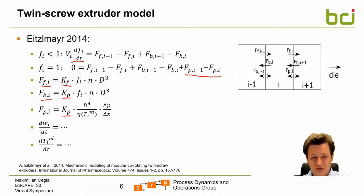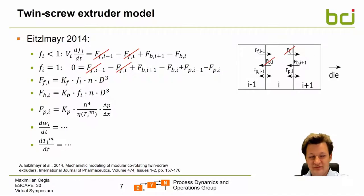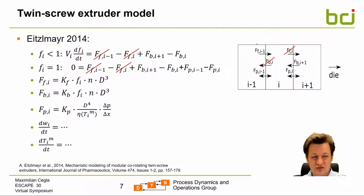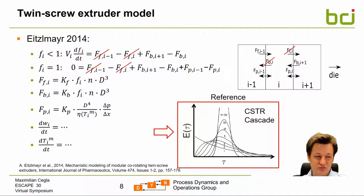We can also solve the differential weight fraction balance for each element when multiple components are present. The normal simplification performed by Eitzelmeier is that for each screw element only one main conveying direction is considered; therefore one of the two flows is set to zero by choosing the parameters kf and kb accordingly. This leads to a very narrow residence time distribution that can essentially be described as a CSTR cascade, which will serve as our reference and benchmark.